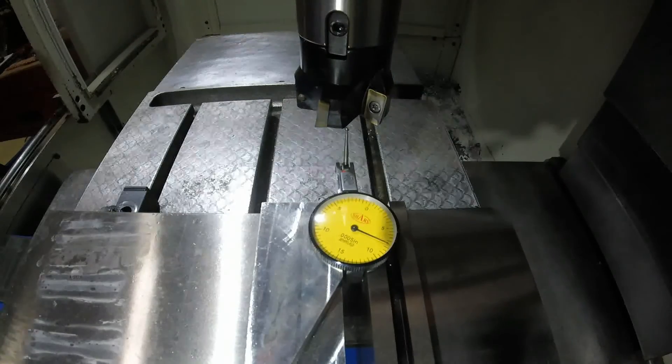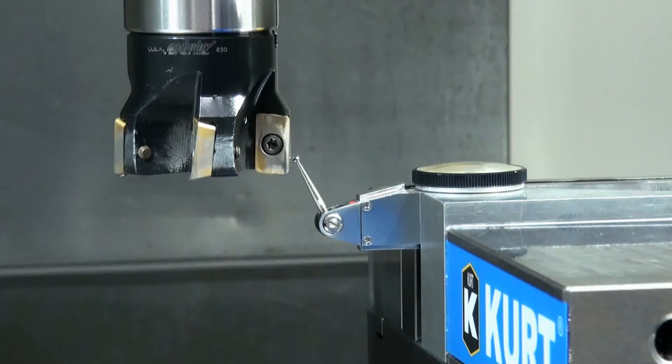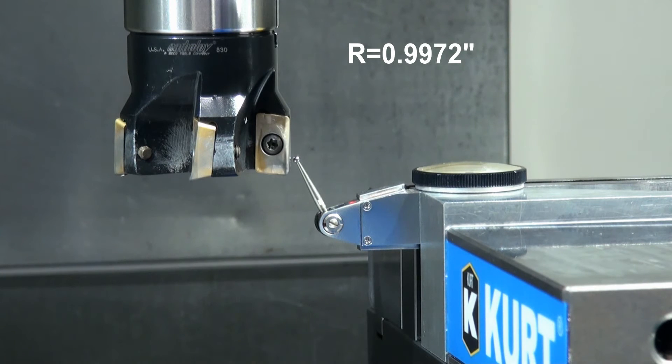So now we can look up at our tool display, or our x display. And our x says .9972. So that is the radius of this tool. And this is supposed to be a two inch facing mill. And it's measuring out at 1.9944. So it's just a little bit undersized.